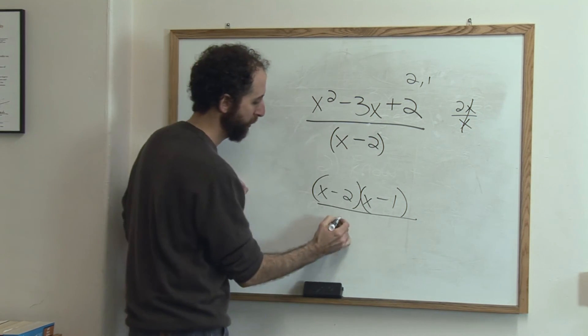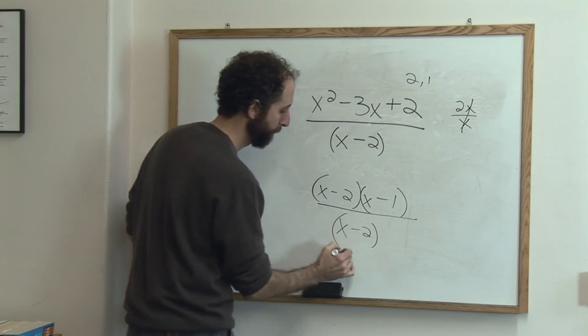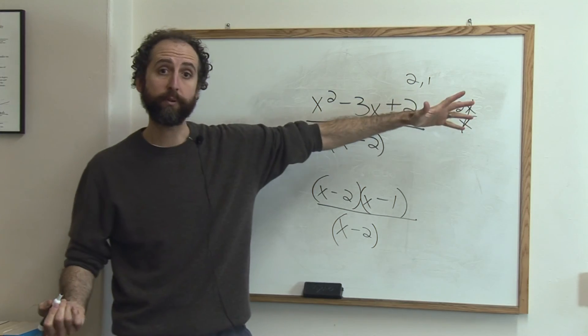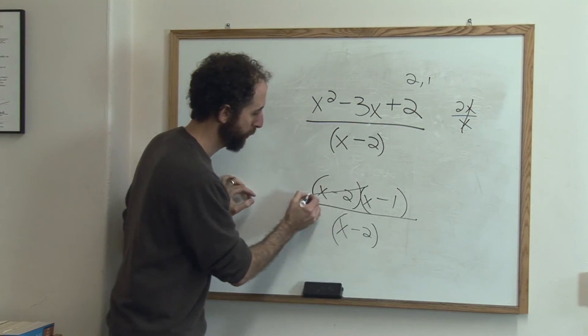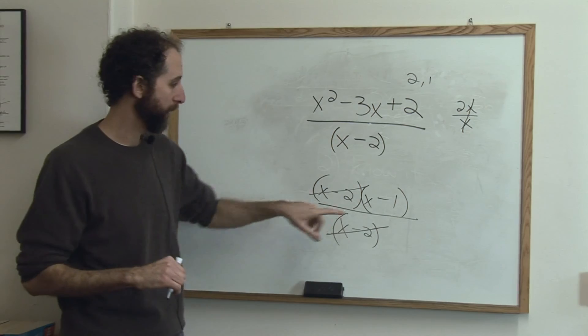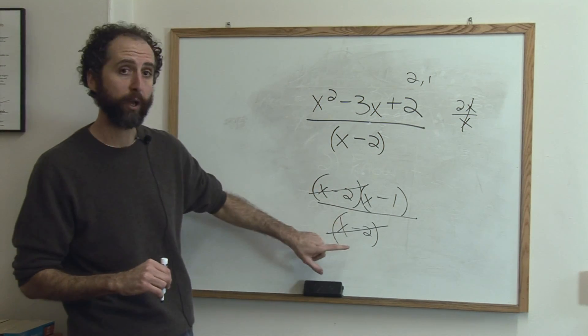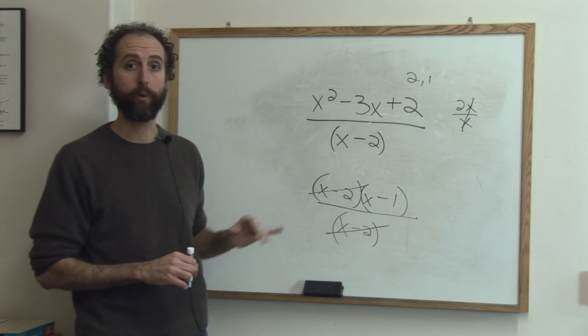And then on the bottom we have x minus 2. Now just like in this example here, we have something on the top and bottom that simplify out. x minus 2 and x minus 2 cancel out, leaving me x minus 1. So this rational expression simplified is simply x minus 1.